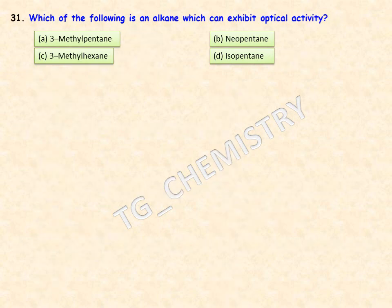Which of the following is an alkane that can exhibit optical activity? An alkane showing optical activity must have chirality in its molecular structure. Options are 3-methylpentane, neopentane, 3-methylhexane, and isopentane. Option C — 3-methylhexane — is the right answer.